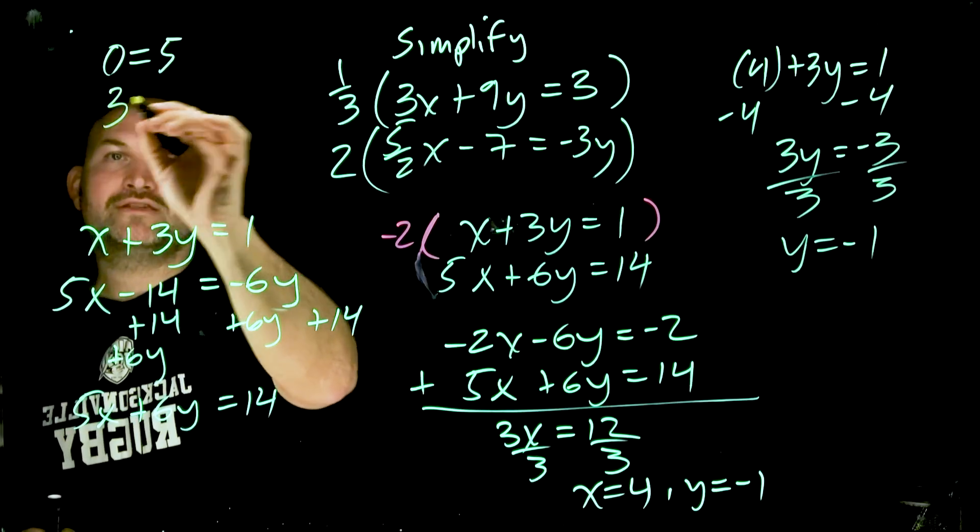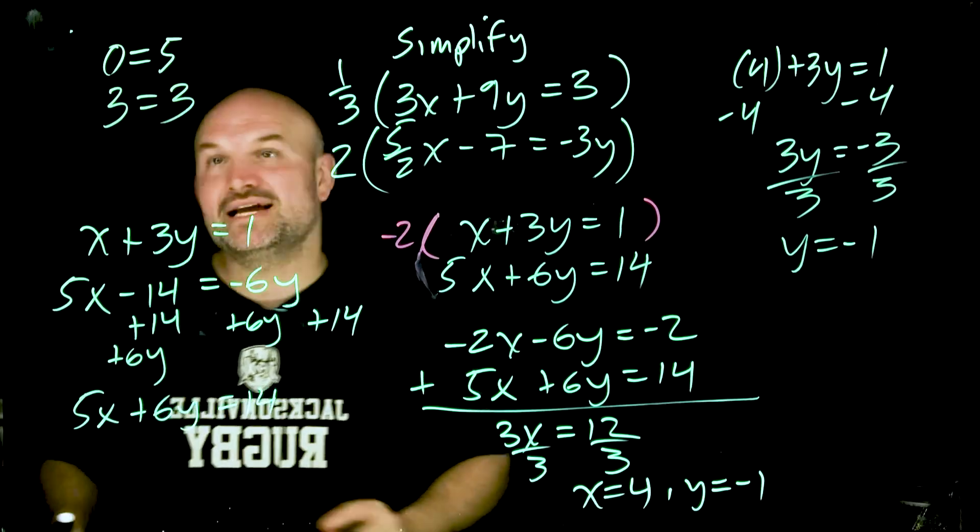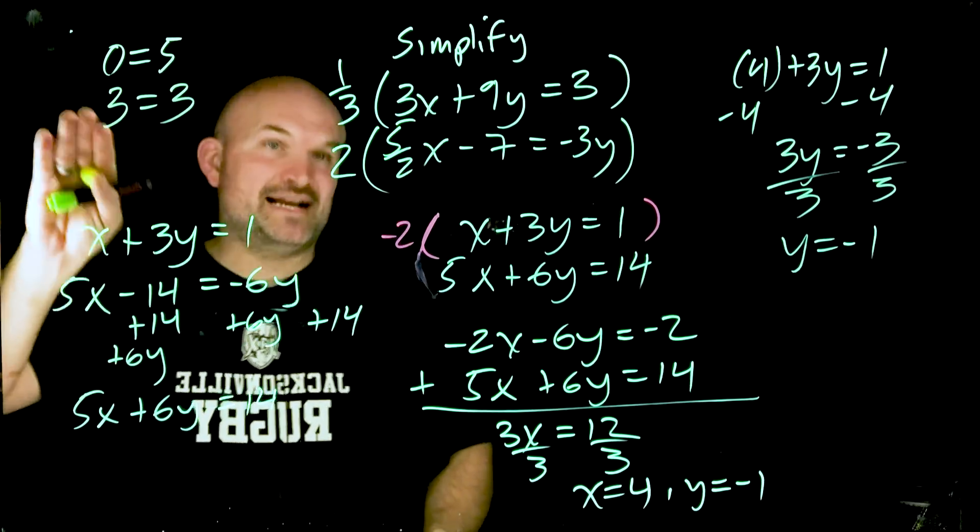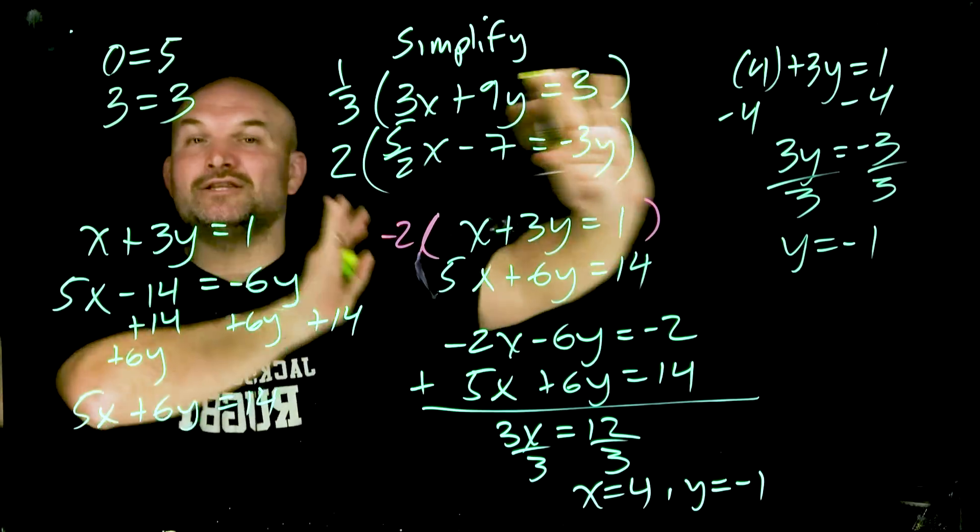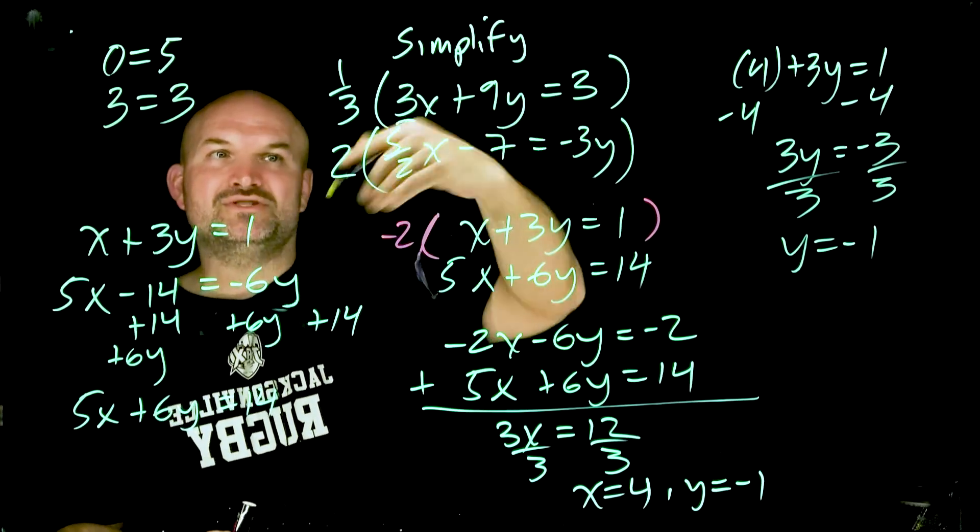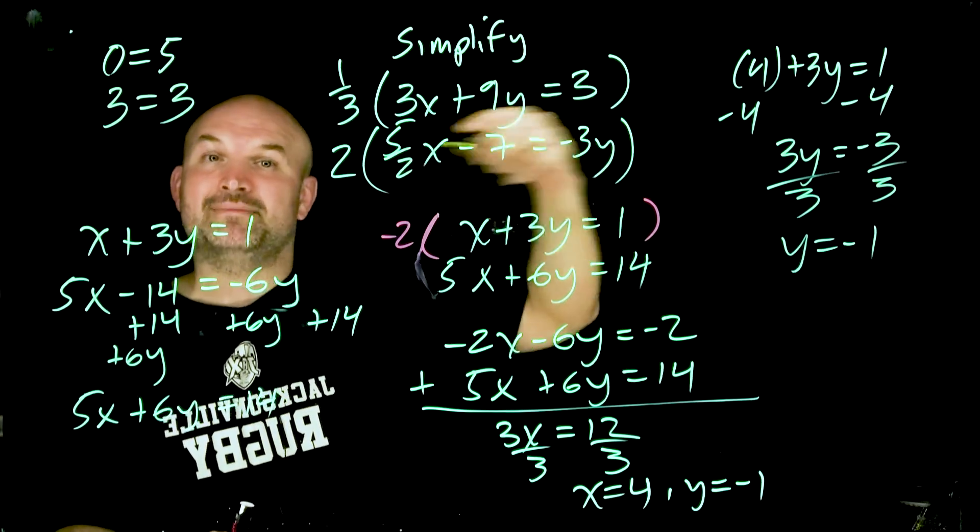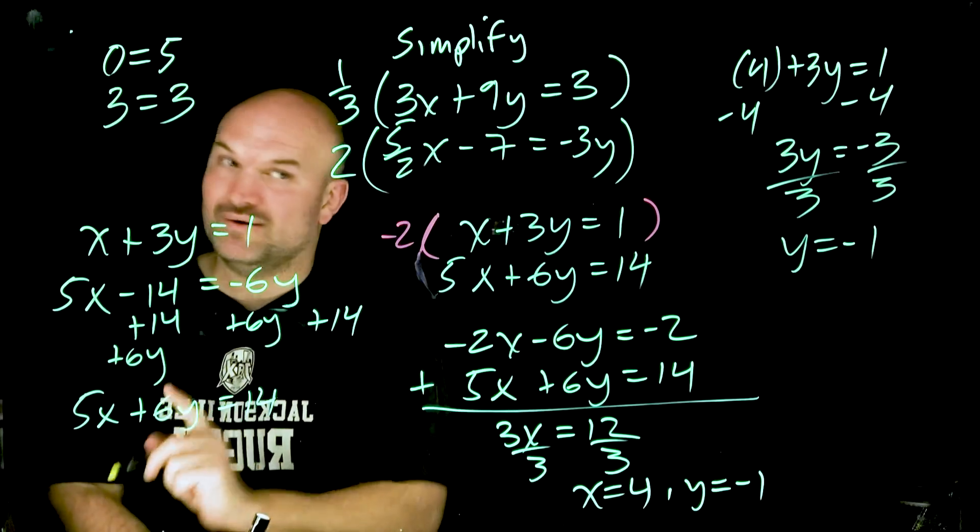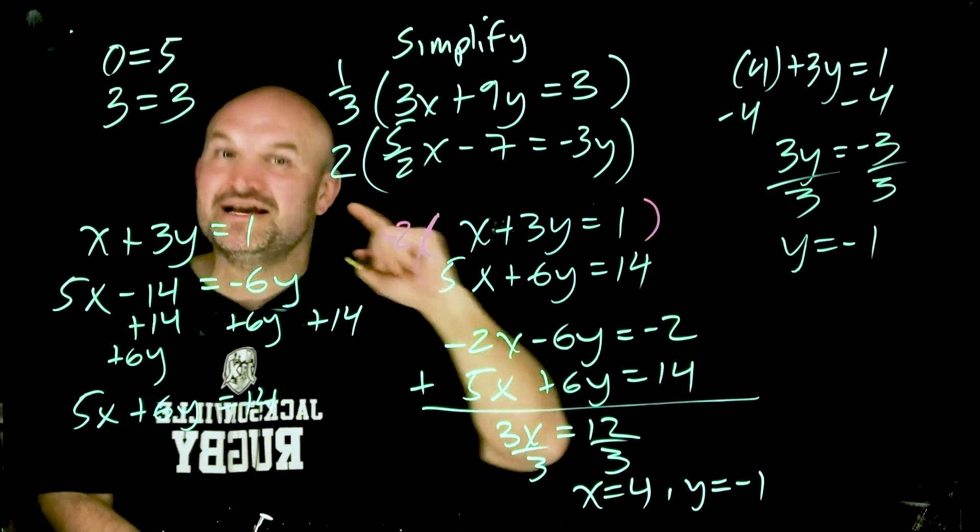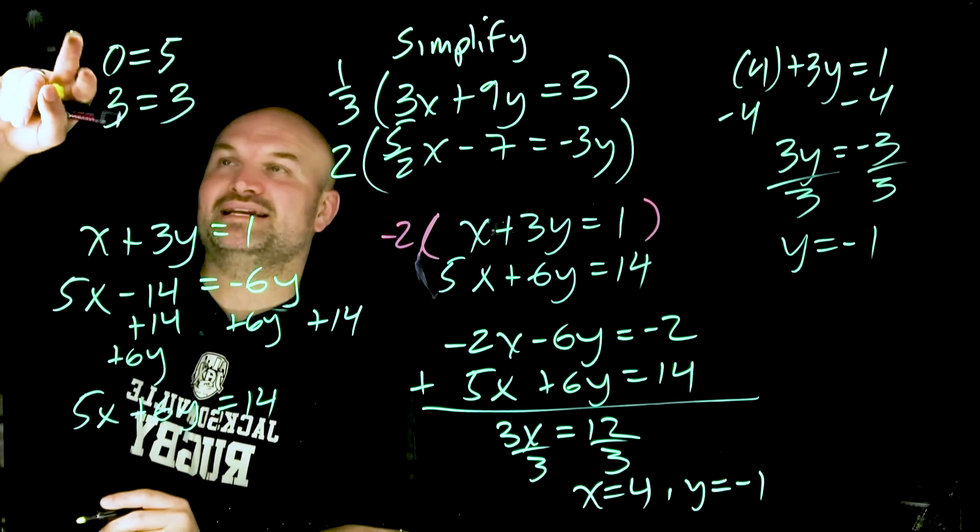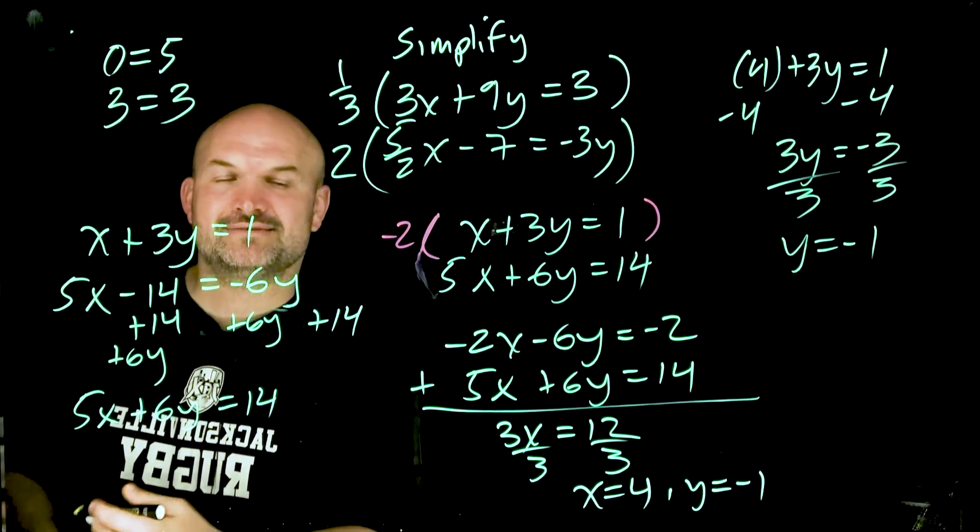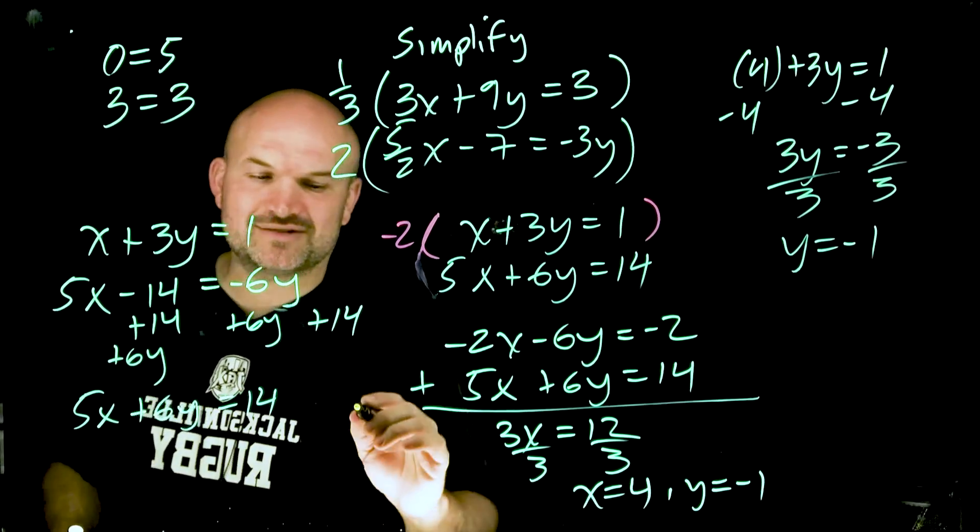That's never going to be true. Or if you get something like 3 = 3 as your final answer. That would be infinite many solutions. So always be on the lookout to simplify them because if you start to see a lot of them have a common scalar, a lot of times, not always, I just showed you not always, but a lot of times that will be an example of a no solution or infinite many solutions case. Hopefully this video has helped for you. I'll see you on the next one.